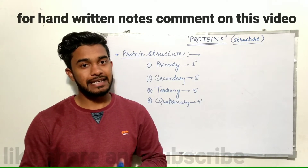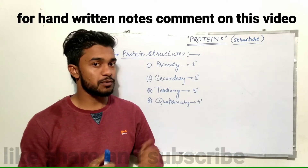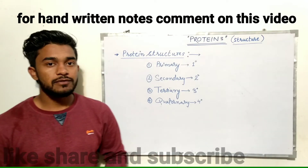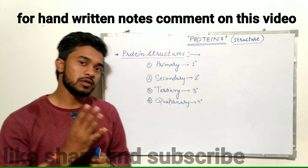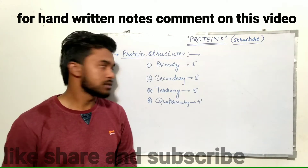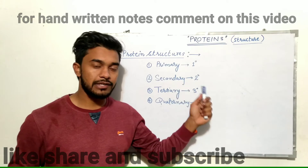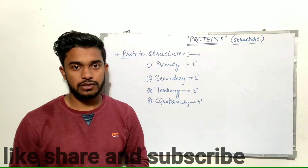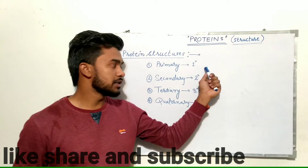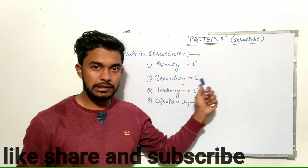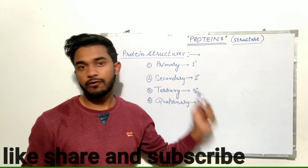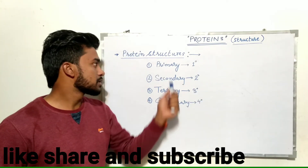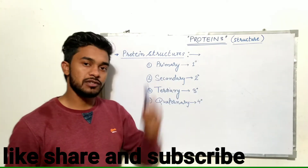Today we are going to study the next topic: protein structure. We have four types of protein structure — primary, secondary, tertiary, and quaternary structures — also called one degree, two degree, three degree, and four degree structures. First of all we have to study the primary structure of proteins.